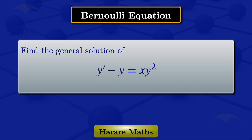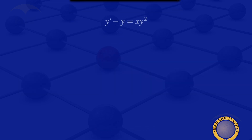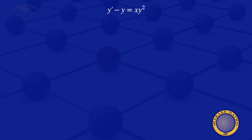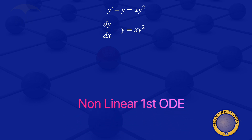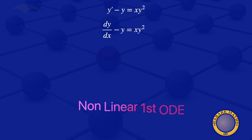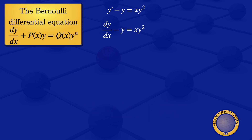To find the general solution of the ODE y prime minus y equals x y squared, I first rewrite that equation in full: y prime — the derivative of y with respect to x — then minus y equals x y squared. We see that this is a non-linear first order ODE. We also note that this is a Bernoulli differential equation because it is of the form dy/dx plus p(x)·y equals q(x)·y to the power m.